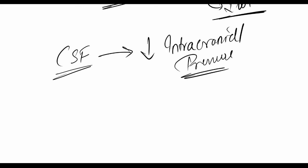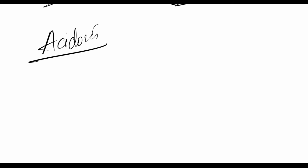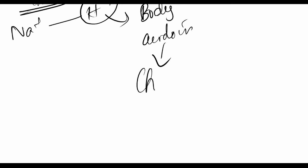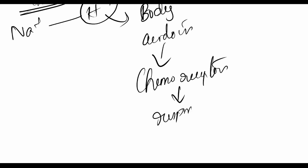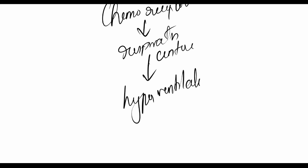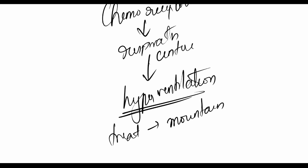These inhibitors cause acidosis by blocking the exchange of sodium ions for H+ ions, so H+ ions stay in the body. This acidosis can trigger chemoreceptors in the brain, which in turn trigger the respiratory center, leading to hyperventilation. The respiratory center is very sensitive to acidic pH, and at acidic pH it triggers hyperventilation.